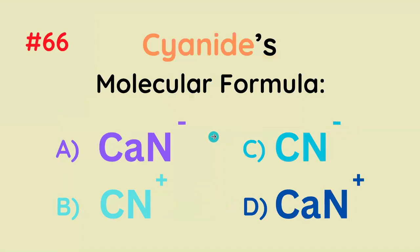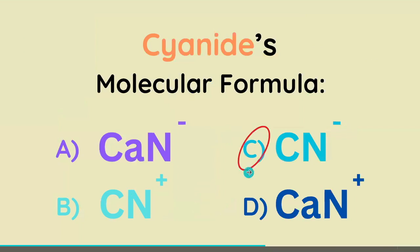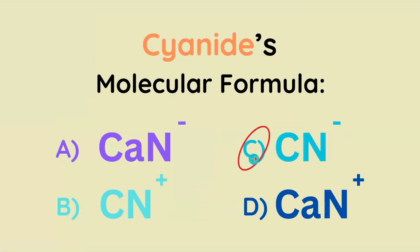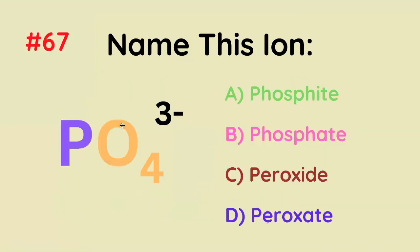Cyanide has a molecular formula of what? It's going to be CN⁻. What's the name of this ion, PO₄³⁻? It's going to be phosphate — this is something you must memorize because it's going to show up a lot.